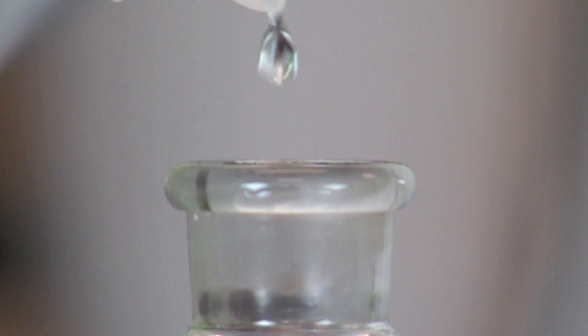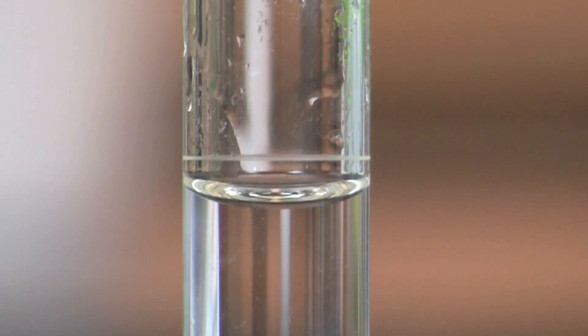Using a dropper bottle or transfer pipette makes it easier to add water drop by drop when near the etch mark.